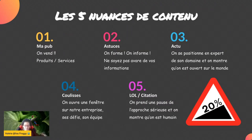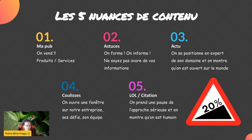Petite information. Le triangle 20%, il est super important. On a cinq contenus. Cinq contenus, 100% des contenus. Chaque catégorie devrait représenter 20% de vos contenus. Ça veut dire que si tu as envie de faire cinq pubs dans ton mois,